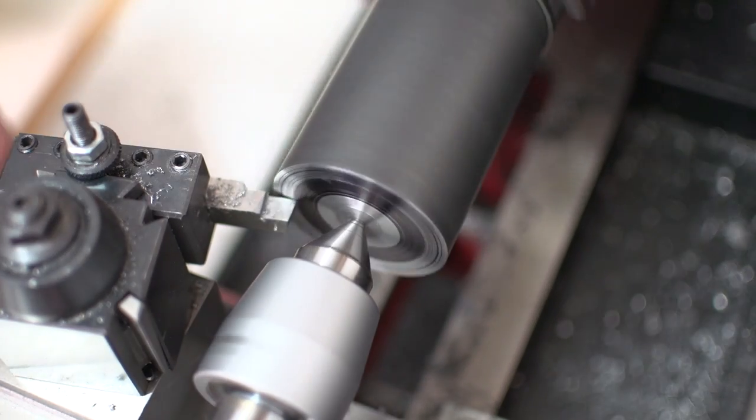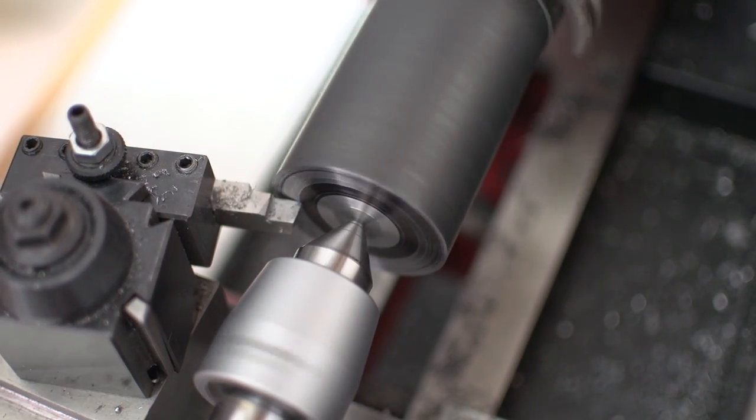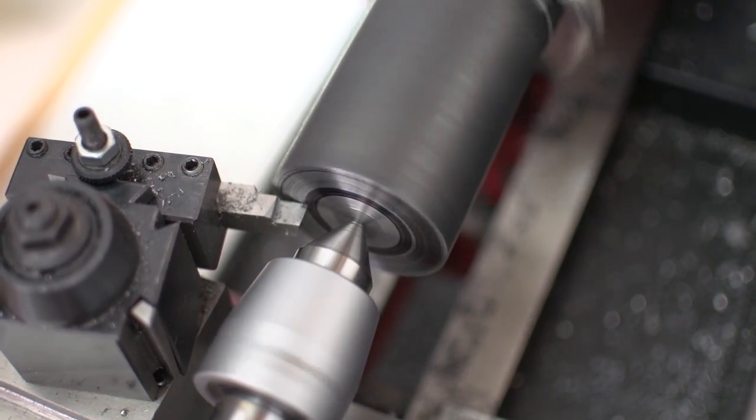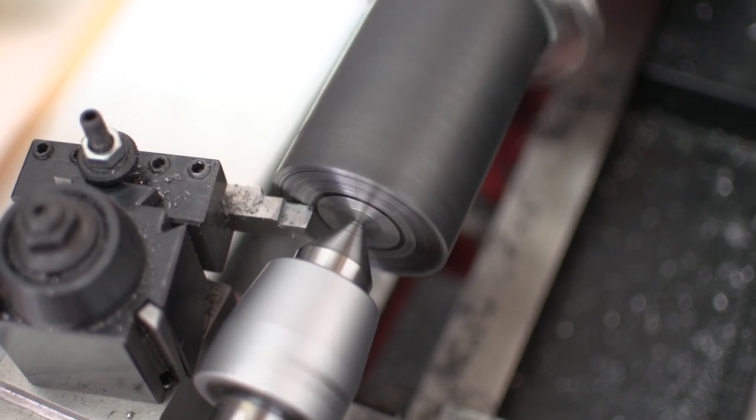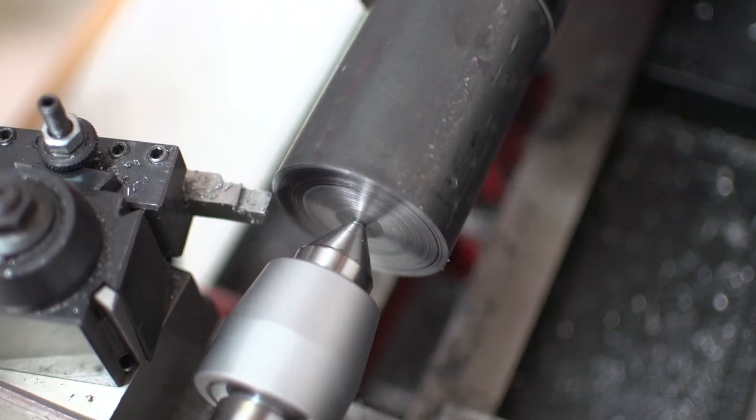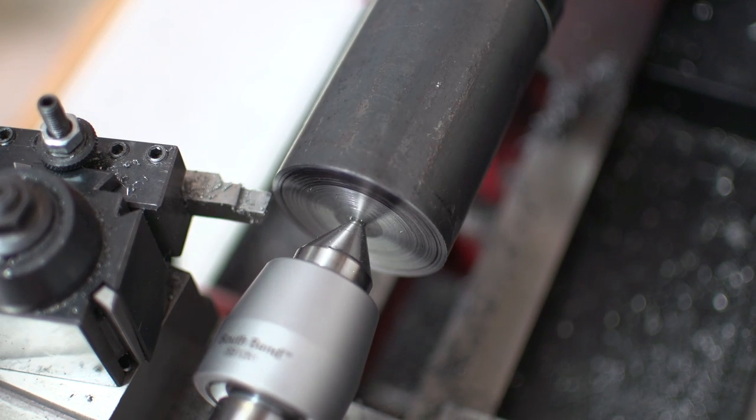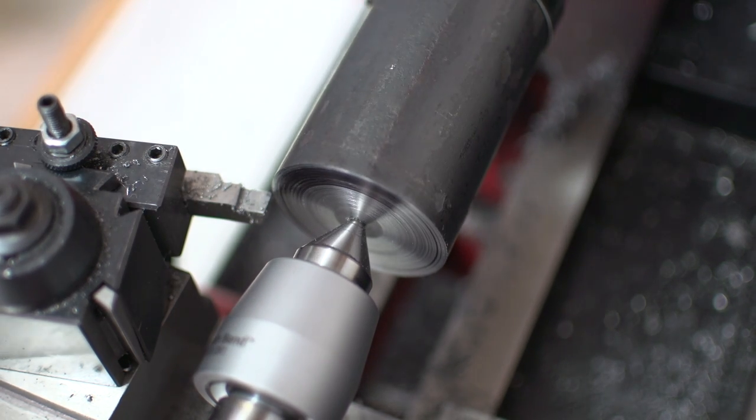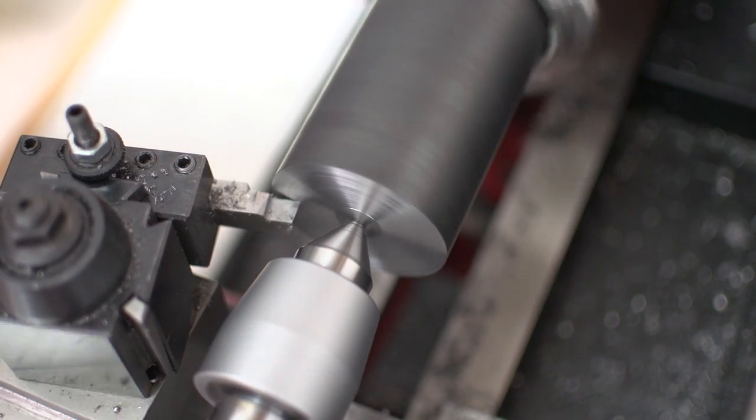And now here you can see I used a sharpie to mark the end. Because I was getting really close to the final height I wanted this to be. So I did that so I didn't take off too much. I only took off what I needed to to get this thing faced.